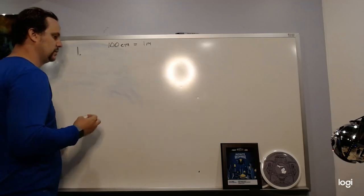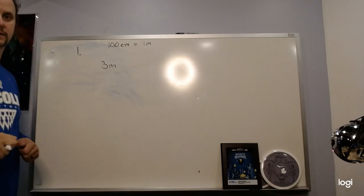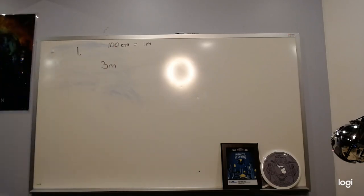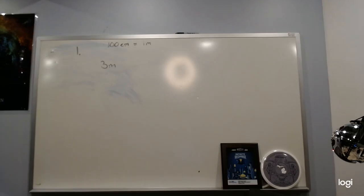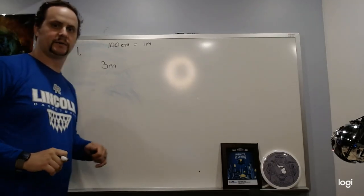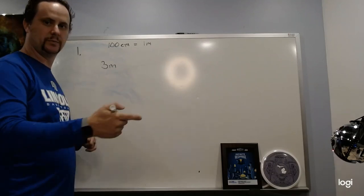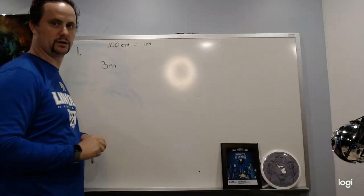We want to start with three meters and we want to convert that to centimeters. Well, we've got our conversion: 100 centimeters to one meter. We've got three meters and we want to put our conversion factor. Usually what we want to do is put this as a fraction, and we put it as a fraction with the unit we want to cancel out on the bottom.